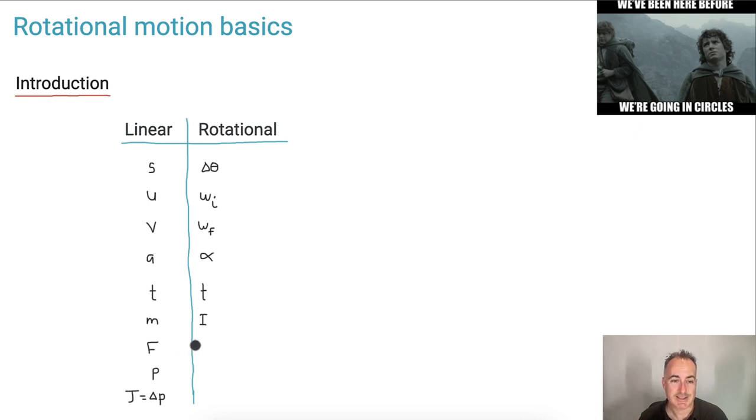F, it's kind of torque, but I'm going to say kind of. That's because it's not exactly, but it's close. I think this is an okay way to think about it. P, momentum, we've got angular momentum. We're going to use L for that. And where J, the impulse, was equal to the change in momentum, then we also have a change in angular momentum, delta L. So these are the main terms we need to be coming to terms with.